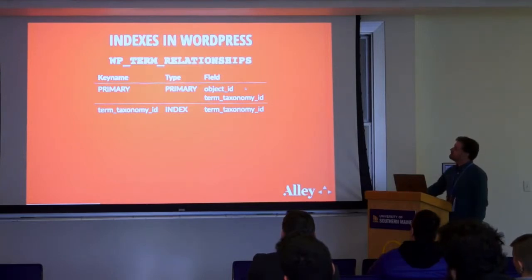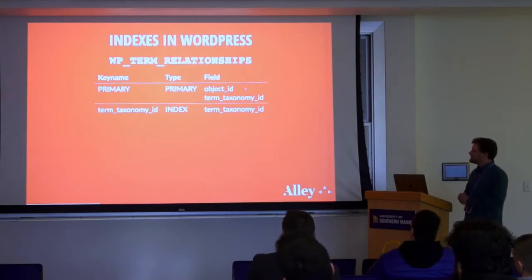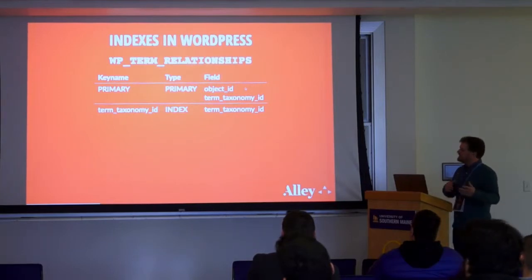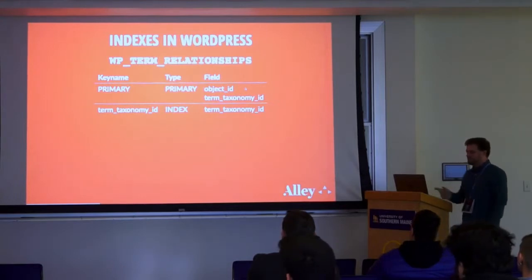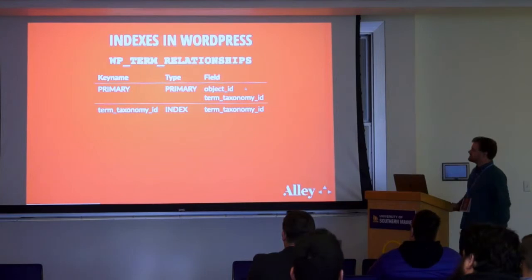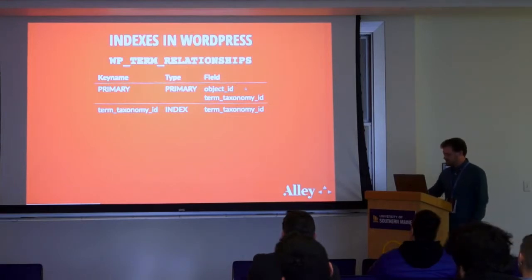Looking at the wp_postmeta table, there's a primary index on the meta_id field — which we never actually use in WordPress. There's an index on post_id and an index on meta_key. Those two are super important. What's also noteworthy is what's missing: there's no index on the meta_value column. We'll talk quite a bit more about that later. The wp_term_relationships table has a primary multi-column index on object_id and term_taxonomy_id. Object_id is essentially post_id. There's also an index on term_taxonomy_id, which nowadays is the same as term_id.